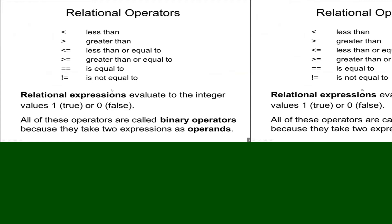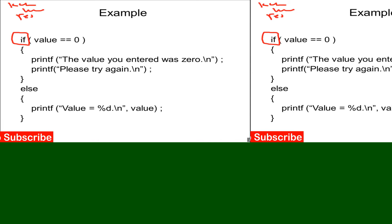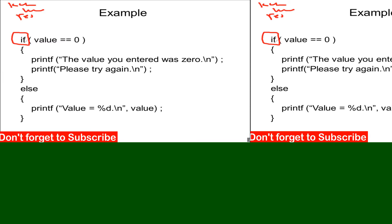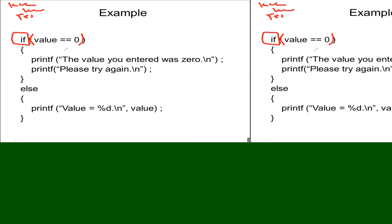Now let's do a simple example. In C, the keyword `if` is a reserved word — you cannot use it as a variable name or function name. After the keyword, we have parentheses. Here we use the parentheses to provide the condition to the if statement.